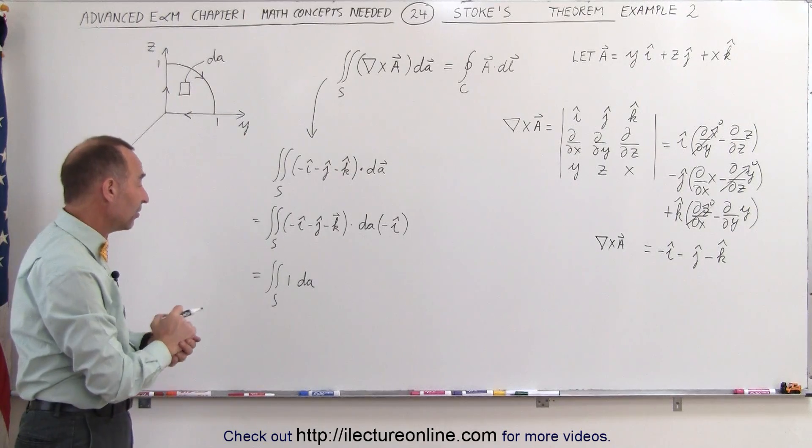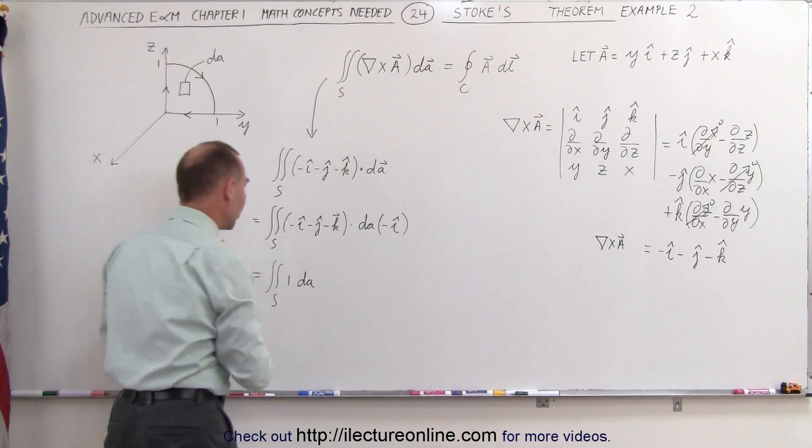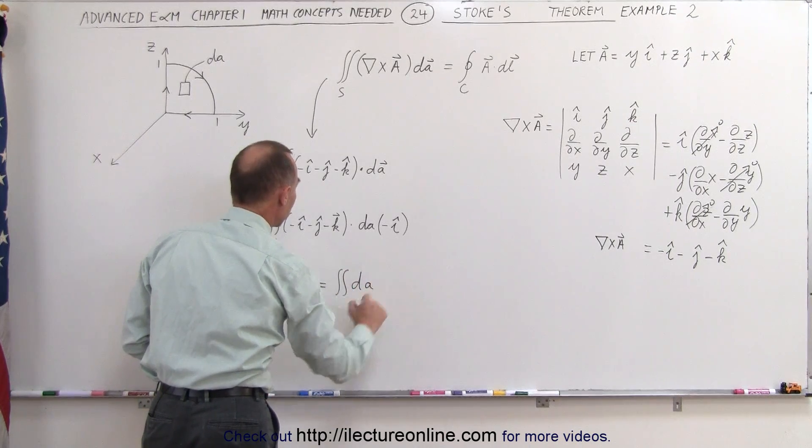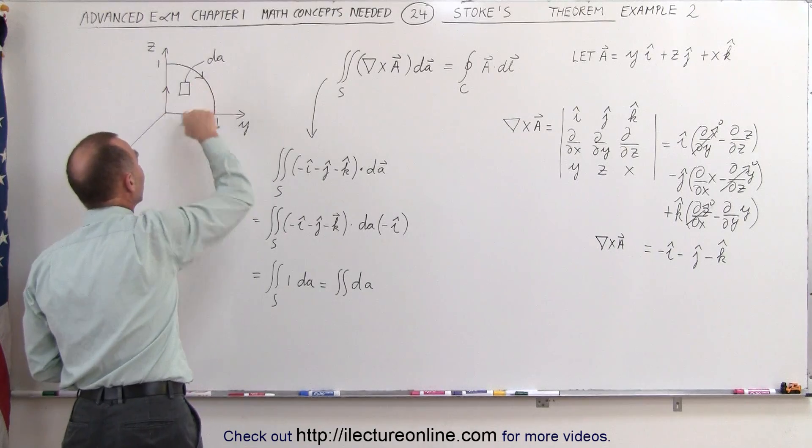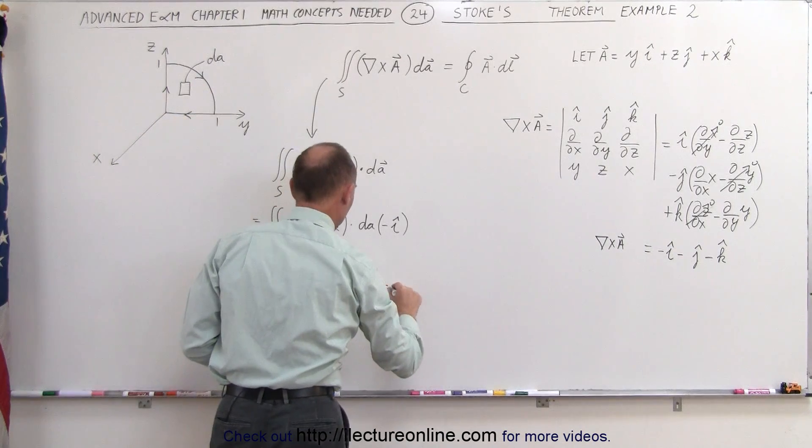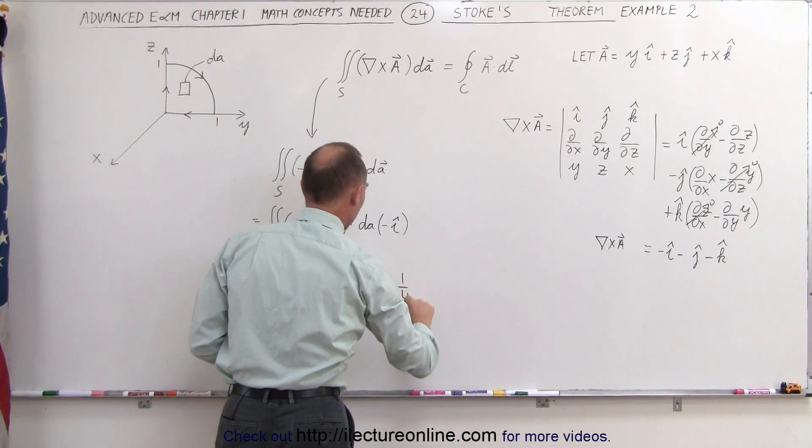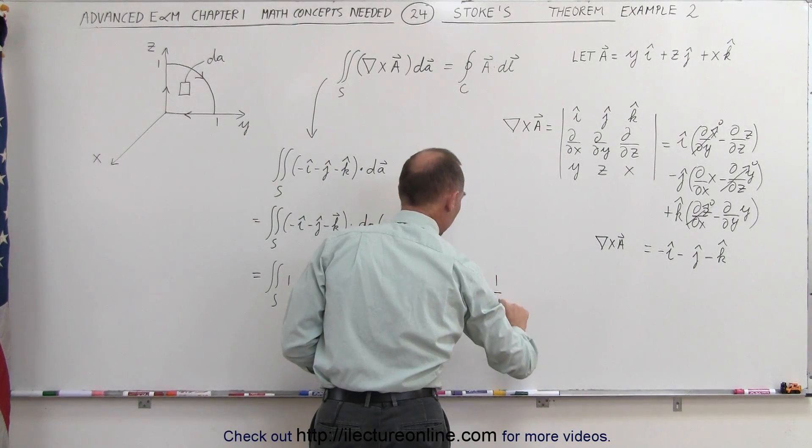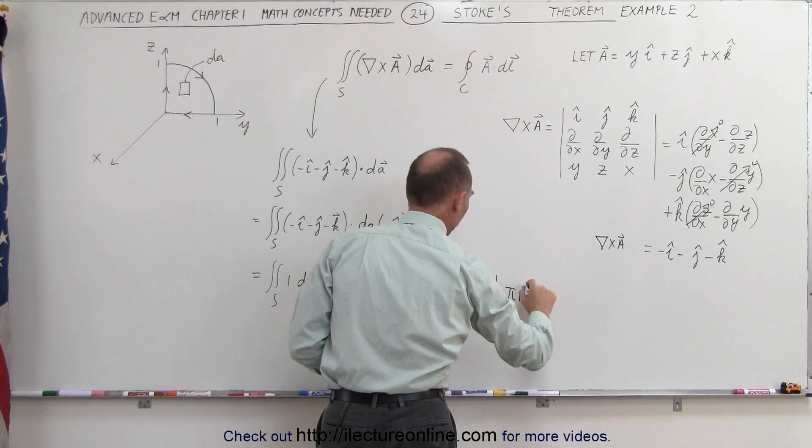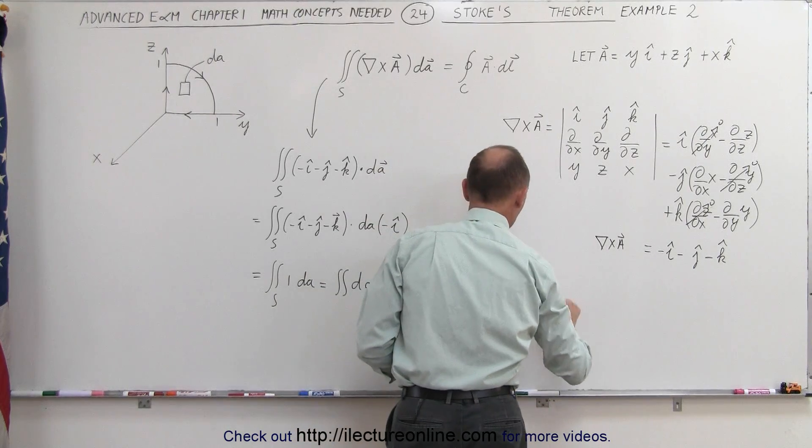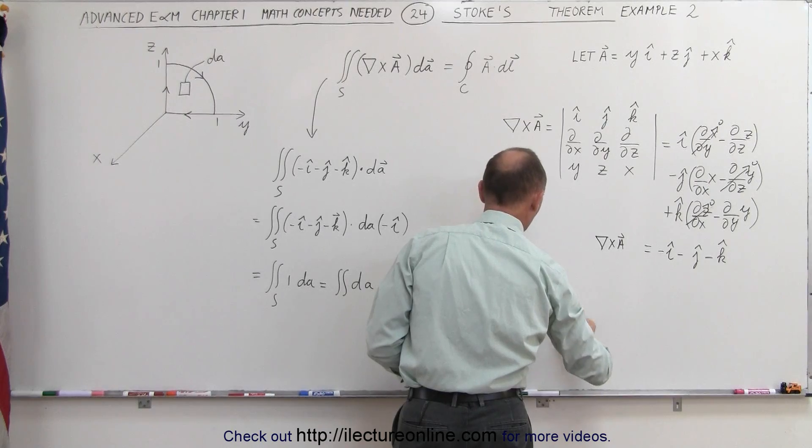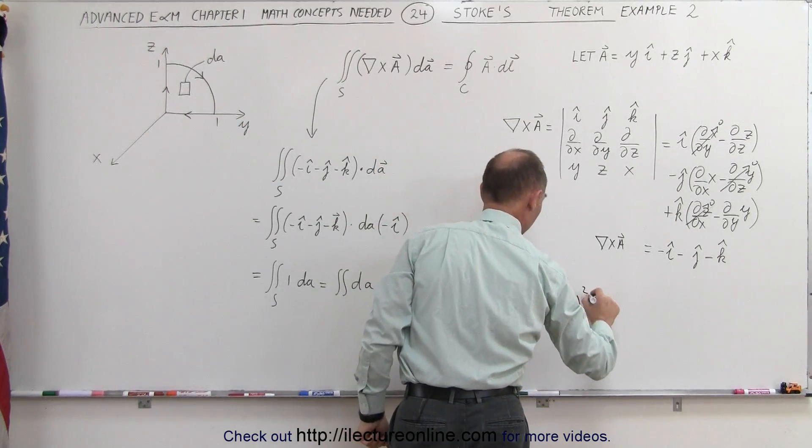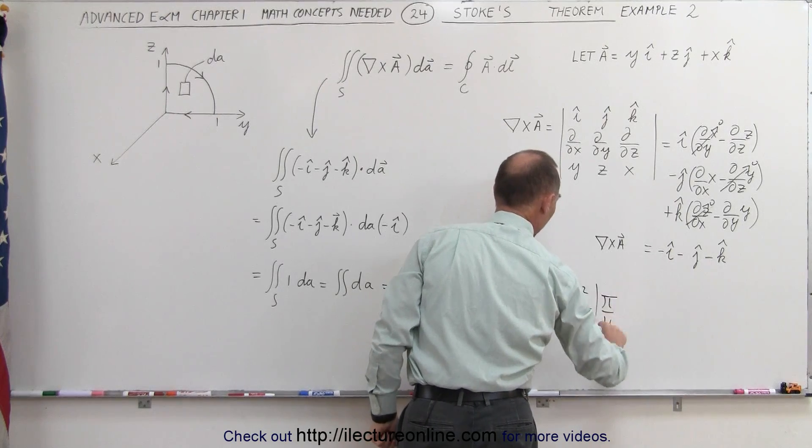All right, if that's the case, that's easy. Take the 1 out of the integral sign, which means it's simply the surface integral of dA, which is the area of this quarter circle. This is equal to 1 quarter, the area of a circle, which is equal to 1 quarter pi r squared, which is equal to pi divided by 4, and r, in this case, is equal to 1, which is simply pi divided by 4.